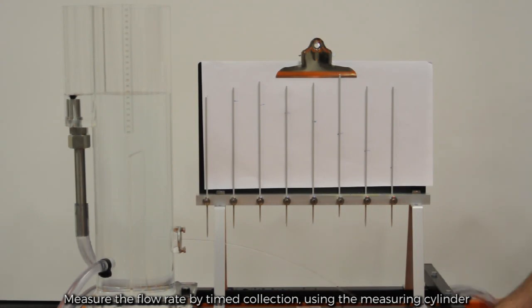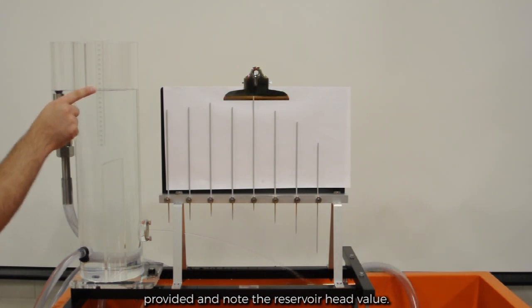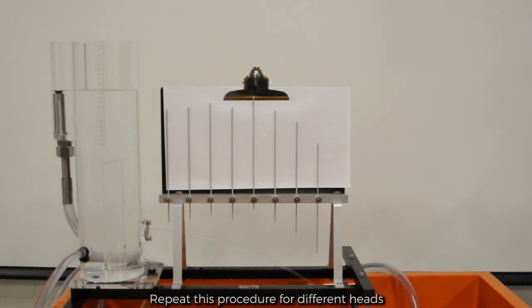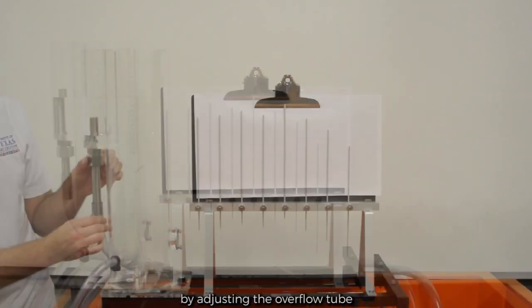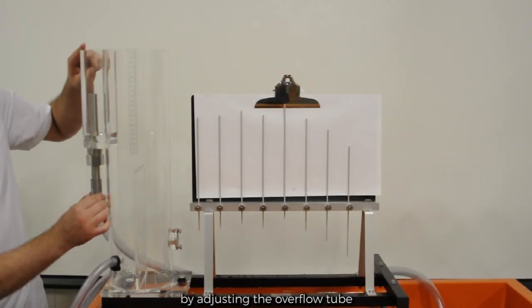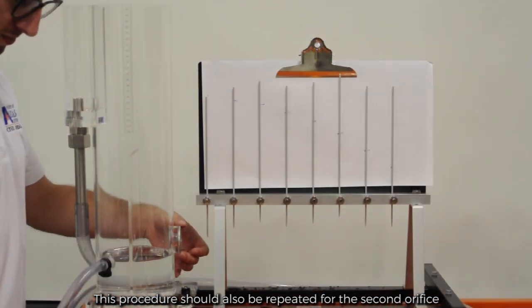Measure the flow rate by time collection using the measuring cylinder provided and note the reservoir head value each time. Repeat this procedure for different heads: 320, 300, 280, 260, and 240 millimeters by adjusting the level of the overflow tube. This procedure should also be repeated for the second orifice.